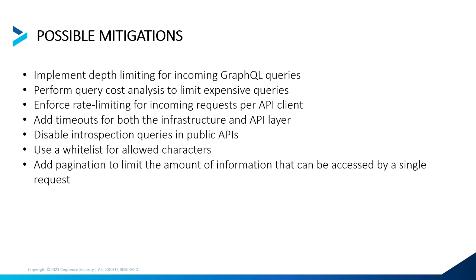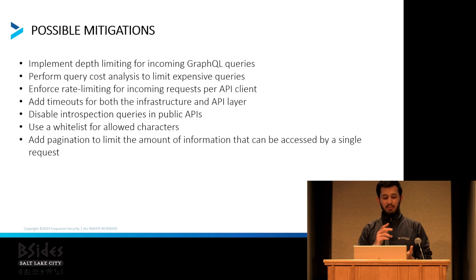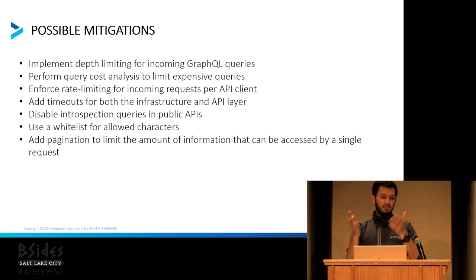These are the possible mitigations you might want to implement. GraphQL has API security issues, but that doesn't mean it doesn't also have injection issues — combined injection, SQL injections, and XSS are still present in GraphQL as well. Rate limiting is a major thing you would want to implement, along with depth limiting for incoming GraphQL queries — limiting the queries sent to the server.